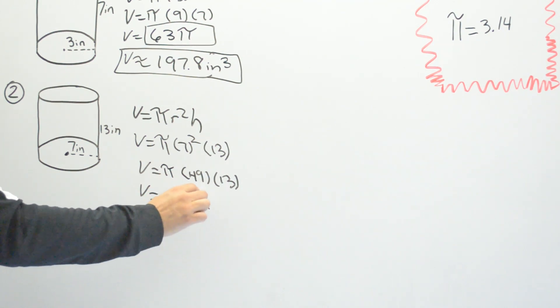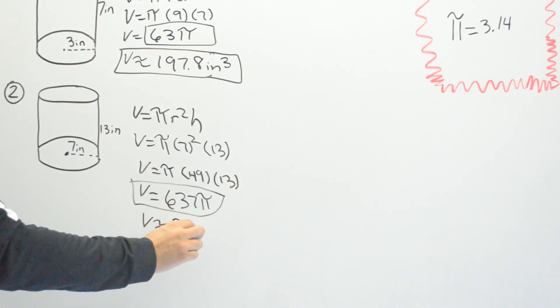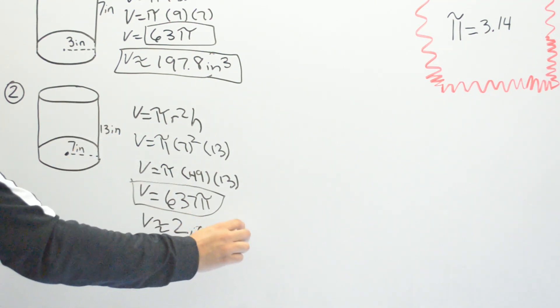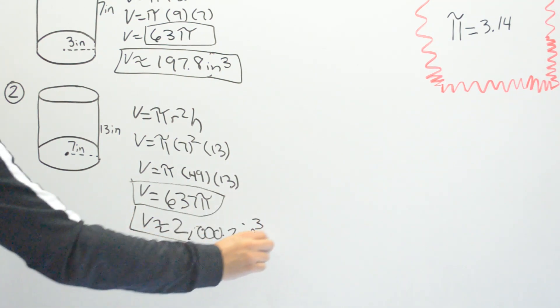Once again, you can go ahead and leave it as that, or the teacher wants to solve it. We use it in this example as 3.14, so we go and multiply 637 times 3.14, and when we multiply that right there we get 2,000 point 8. So again, don't forget your inches, centimeters, or whatever it is, to the third power.